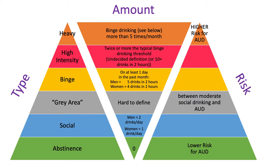This chart clarifies the name for different types of drinkers, what amount that type of drinker consumes, and their risk for developing AUD. Note the high intensity type in red, which is a new term for a person who consumes 10 or more drinks in two hours. This new designation is still not finalized but is now used to capture data about this emerging level of alcohol consumption.